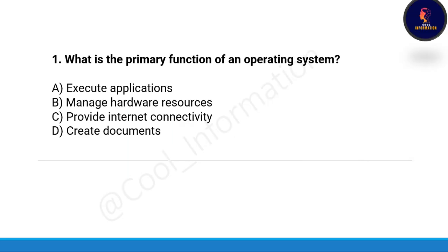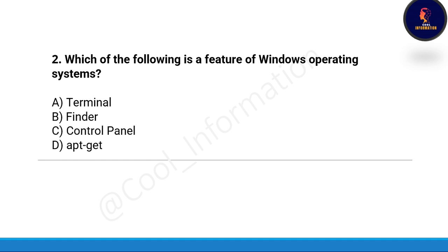Your first question: What is the primary function of an operating system? Option A: execute application, Option B: manage hardware resources, Option C: provide internet connectivity, Option D: create documents. The correct option is Option B, which is manage hardware resources.